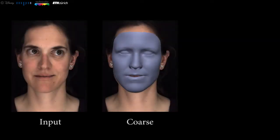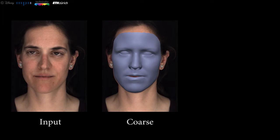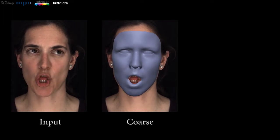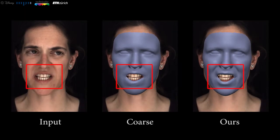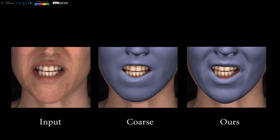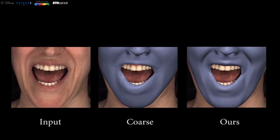We present a novel method for high-quality reconstruction of lips from just monocular video. Given monocular video as input, we first obtain a coarse-scale reconstruction using a state-of-the-art facial performance capture approach. Finally, we regress the high-quality lip shape using a novel RBF lip shape correction network. This allows us to better recover the shape of the lips.